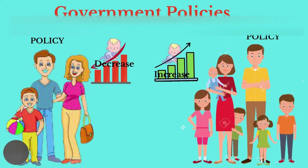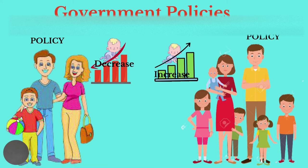Then there are government policies. The government of a country can either encourage an increase or decrease of population, and can slow down or speed up the rate of migration as well as birth rate based on the types of policies. As it relates to natural population change, governments can encourage or discourage births. A pro-natalist policy aims to encourage more births through the use of incentives. An anti-natalist policy aims at discouraging births. In the Caribbean, this has been done through education about family planning as well as increased access to contraceptives.